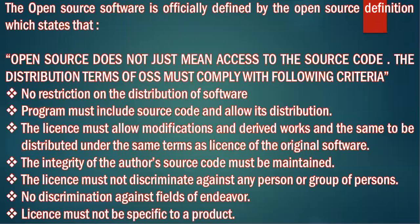Now, what are the terms and conditions complying with open source? This can be an MCQ or case study question. Open source software is officially defined — open source does not just mean access to the source code; it has some distribution terms. First, no restriction on distribution of software — you are free to distribute it. Second, the program must include source code and its distribution. You can modify if you have the source code.